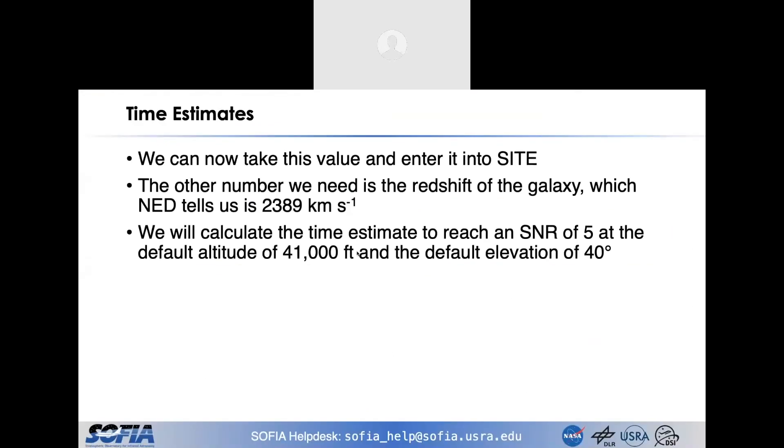So we can take that and bring it into SITE. As we mentioned in the questions just a few minutes ago, the other thing we need in SITE is the redshift, because the different line will fall into a different atmospheric band and also slightly different instrument sensitivity response. So take that from NED as 2389 kilometers per second. And we'll just calculate the time estimate at the standard SITE values of signal to noise ratio of 5, 41,000 feet, and the default elevation of 40 degrees for the telescope.